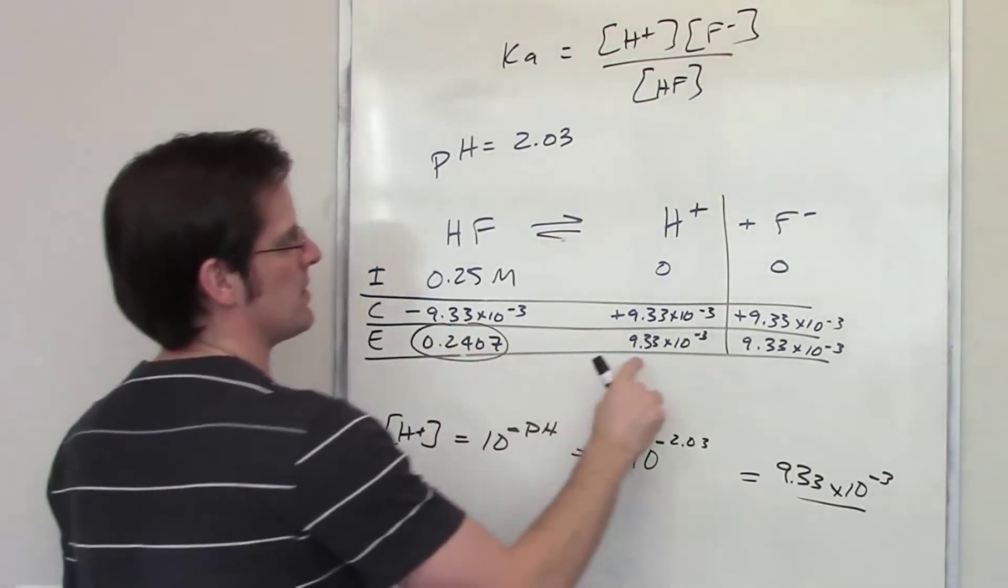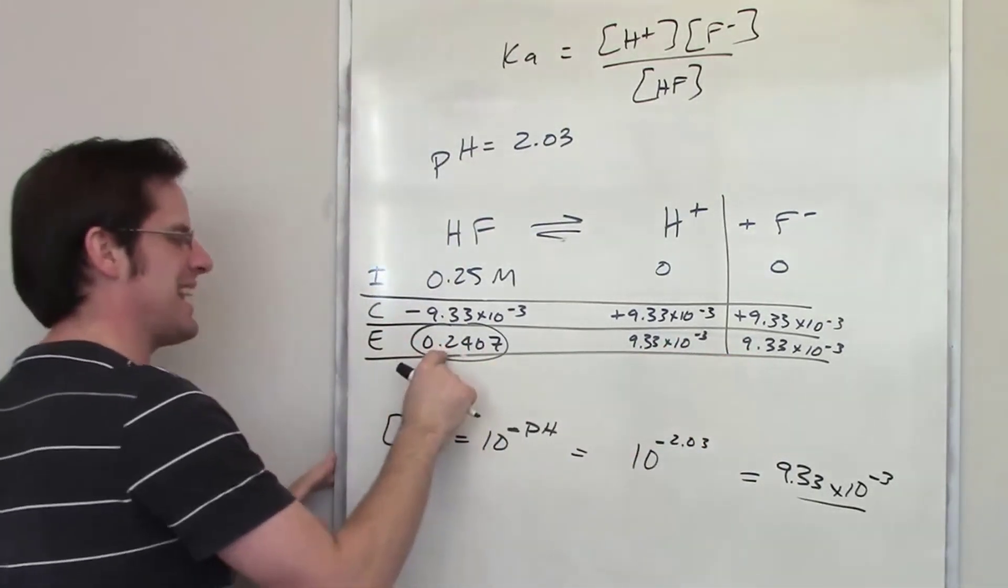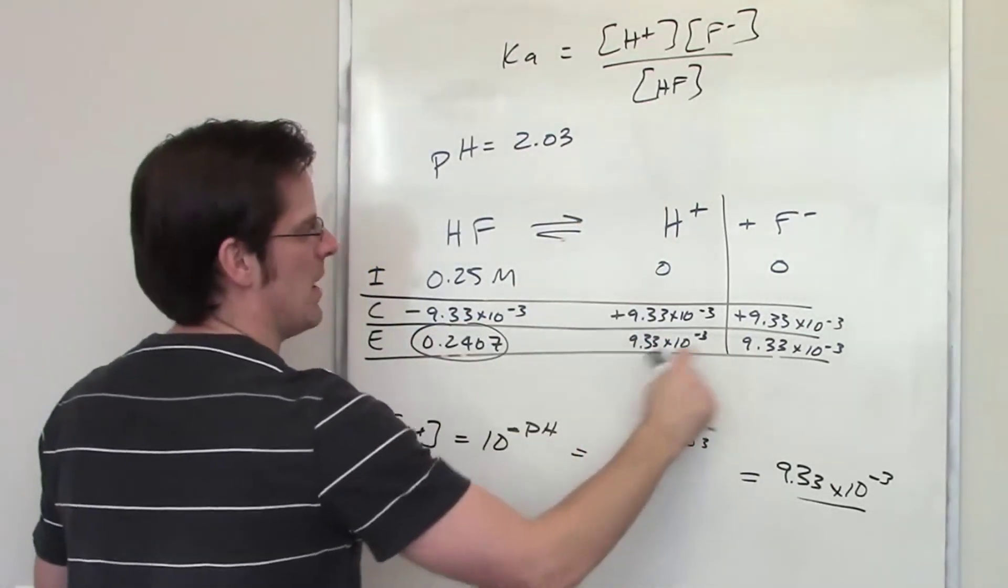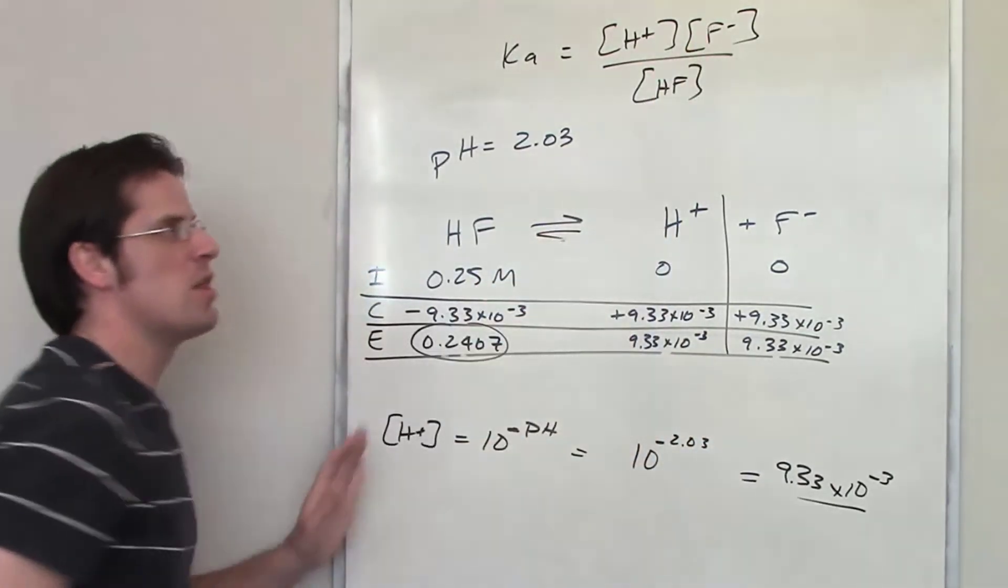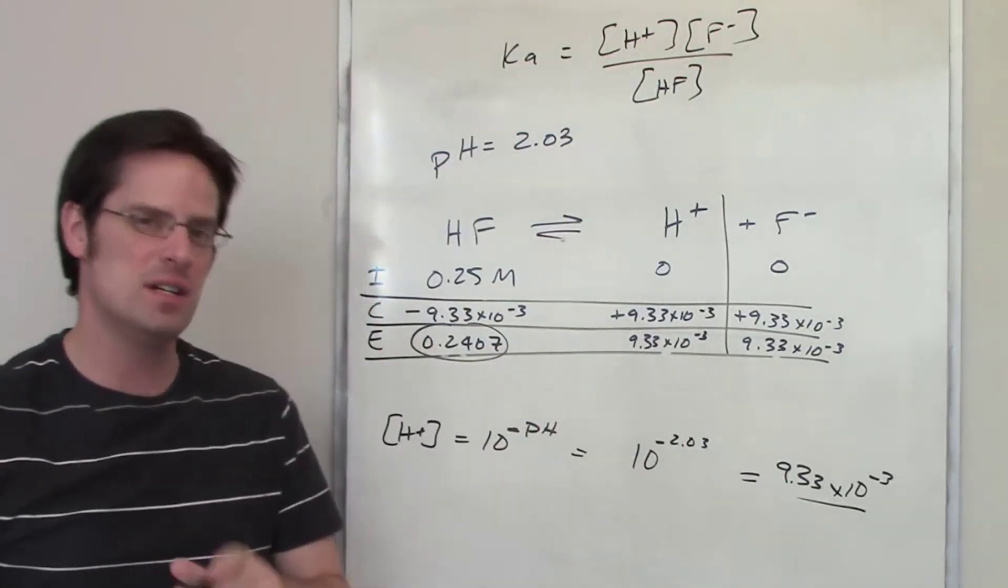I have the equilibrium concentrations of H plus and F minus. I have actual numbers for those. So, all I have to do is take the HF concentration, put it in for there, and then each of these amounts and put them in for there, throw them into my calculator, and that will give me my final Ka value for this.